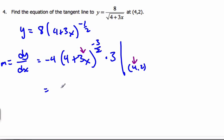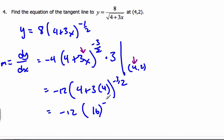Alright, so I get 3 times negative 4 is negative 12. And it's 4 plus 3 times 4 to the negative 3 halves, which is negative 12. 4 plus 12 is 16 to the negative 3 halves.